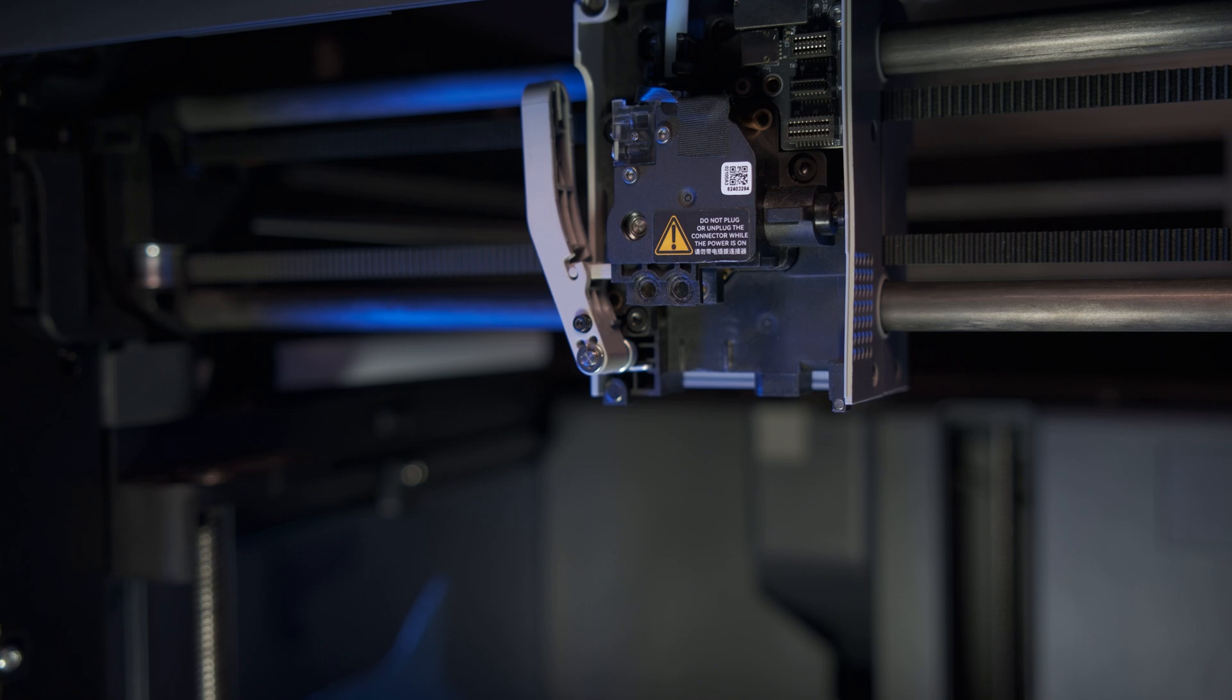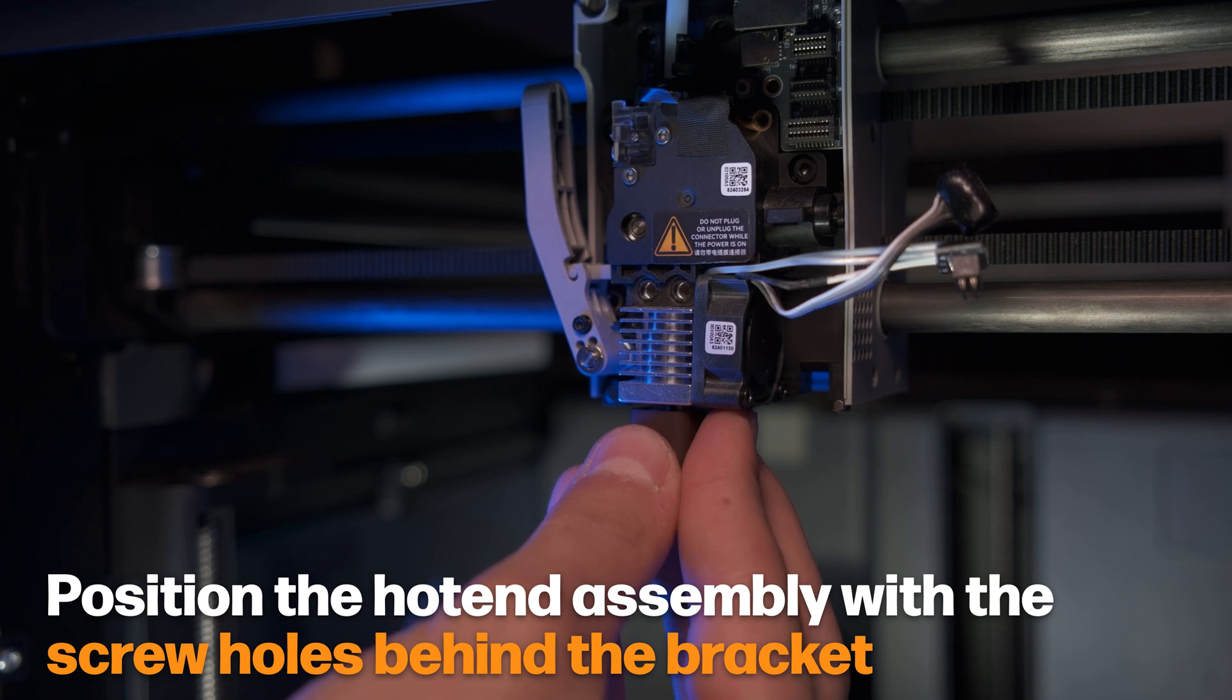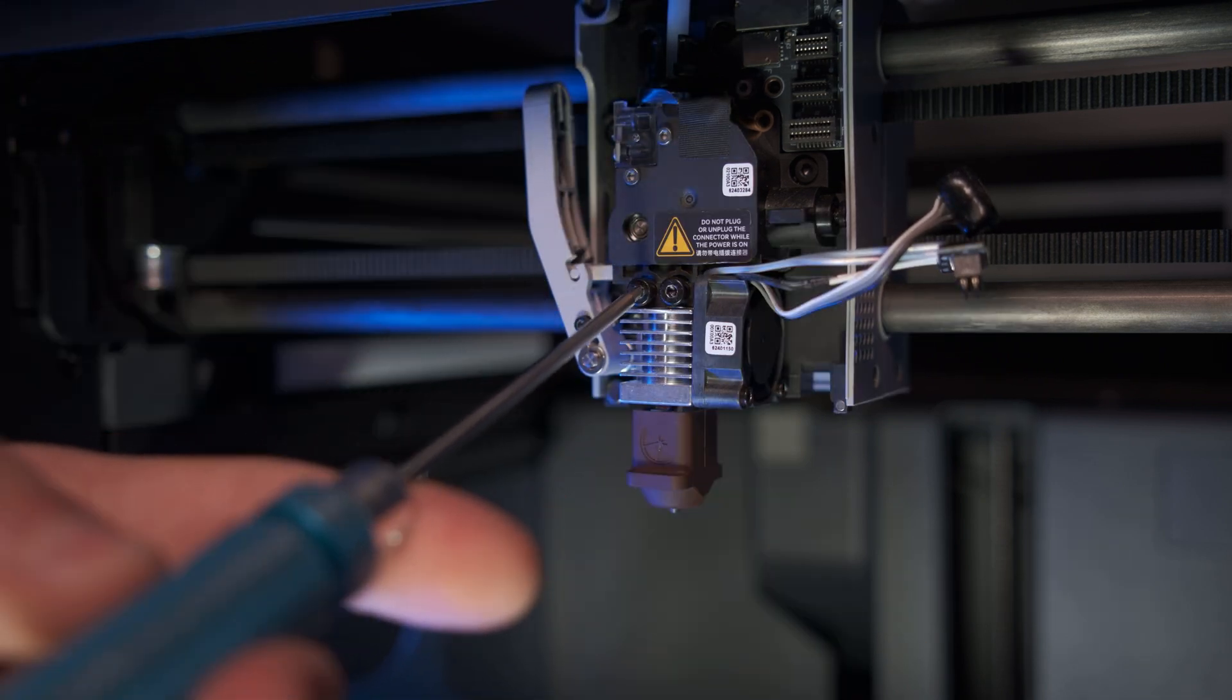Now you're ready for installation. Position the complete hotend assembly so the two screw holes will be behind the bracket. Gently push the two screws in and then tighten them equally, being careful not to over tighten here.